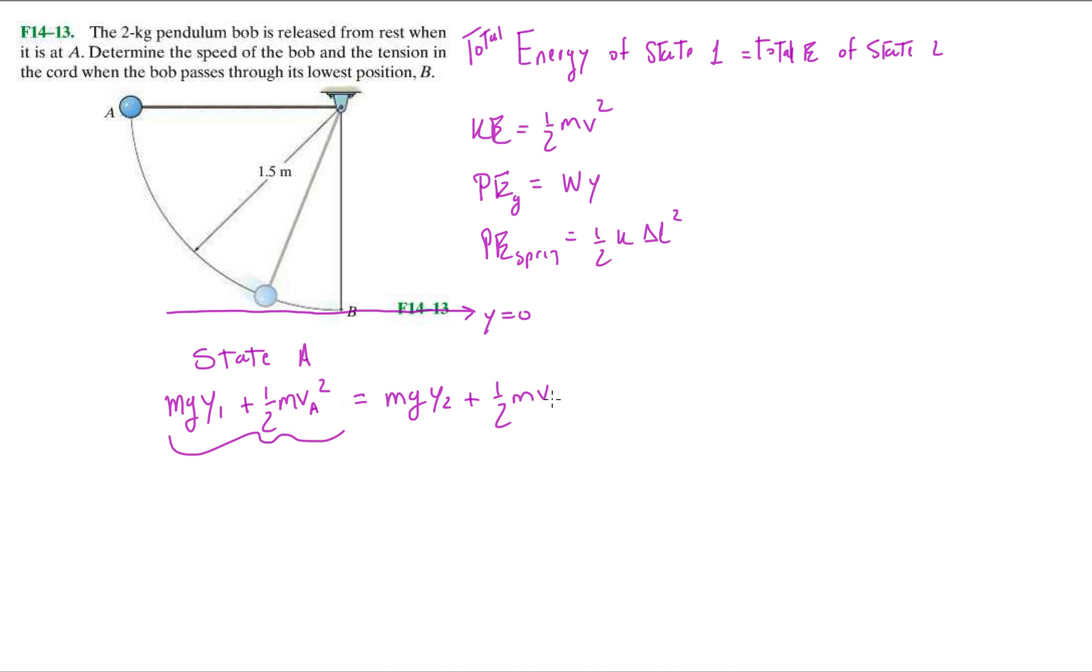So this total energy has to be equal to the potential at state two plus the kinetic energy at state two which is at position B. Let's look at the problem statement. Two kilogram pendulum bob is released from rest.